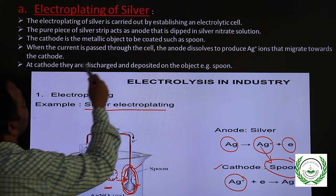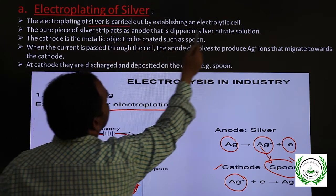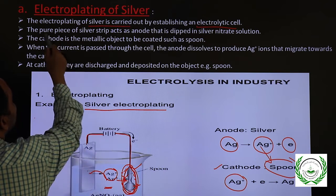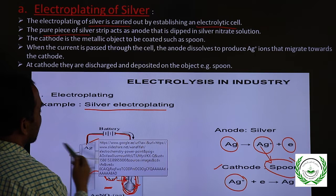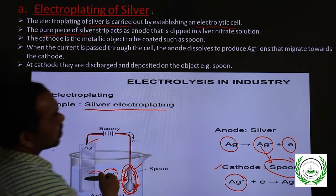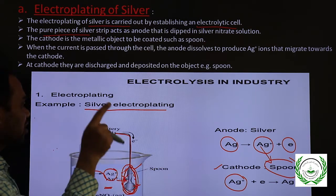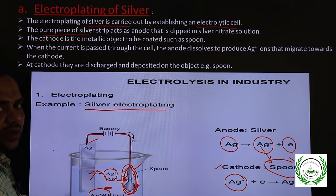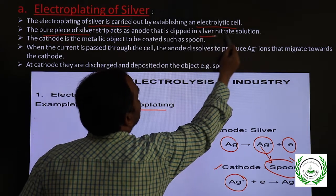Electroplating of silver is carried out by establishing an electrolytic setup. This is a pure piece of silver, which acts as anode, dipped in the solution. The electrolyte is a salt solution of the anode metal — silver nitrate. So the electrolyte is silver nitrate solution.